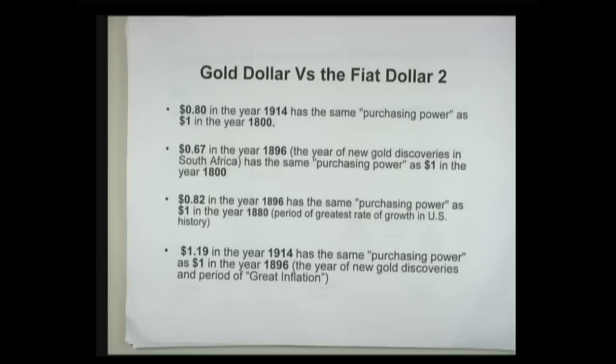From that low point of prices, gold was discovered. There were discoveries and technological innovations in the production of gold, so we had what was called at the time 'the great inflation' — basically 19 percent over 19 years. The dollar depreciated in value by about 19 percent, about one percent per year. Because of the experience with the gold standard, where prices generally gently declined, this was considered unprecedented. Of course, by today's standards, it clearly was not.